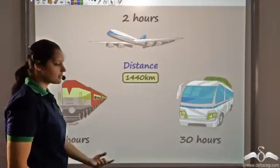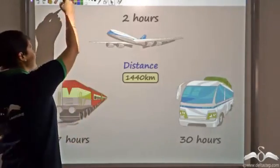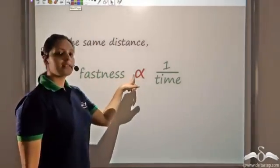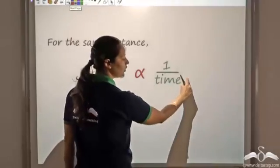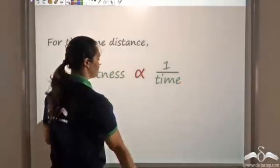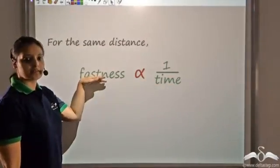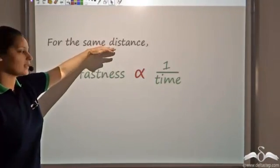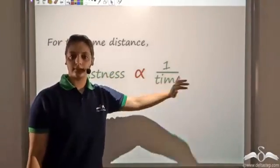The train takes fewer hours than the bus, so it is faster than the bus. What we observe is that fastness is inversely proportional to time: if time is more, it is less fast; if time is less, it is more fast. So less the time, more the fastness; more the time, less the fastness. For that same distance, fastness is inversely proportional to time.